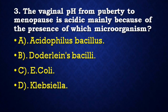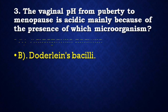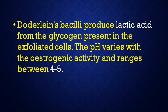Next question: The vaginal pH from puberty to menopause is acidic mainly because of the presence of which microorganism — acidophilus bacillus, Doderlein's bacilli, E. coli, or Klebsiella? Correct answer is Doderlein's bacilli. Doderlein's bacilli produce lactic acid from the glycogen present in the exfoliated cells. The pH varies with estrogenic activity and ranges between 4 to 5.